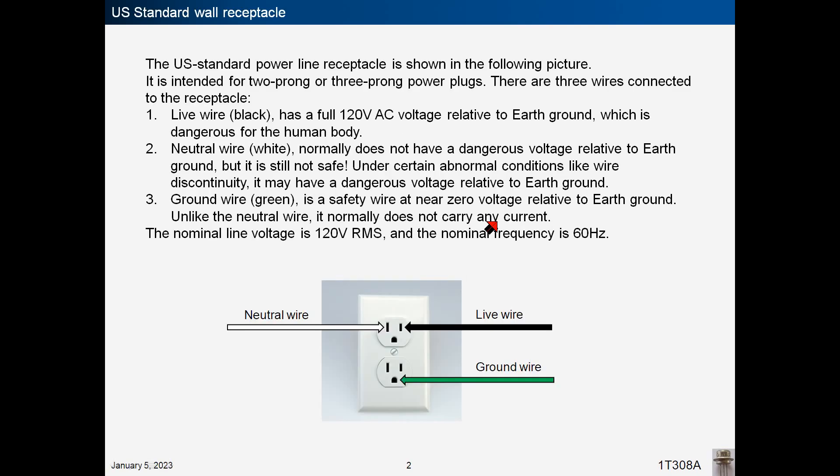The U.S. power line receptacle is shown in the following figure. It is intended for two-prong or three-prong power plugs. There are three wires connected to the receptacle.